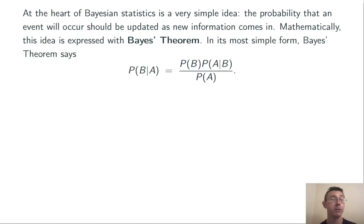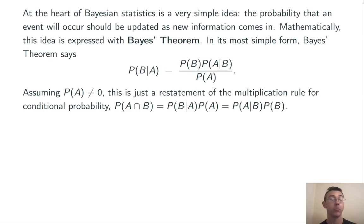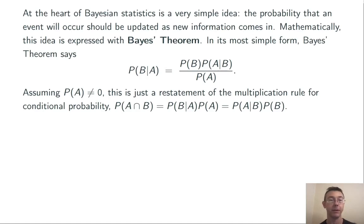The probability of B given A is equal to the probability of B times the probability of A given B, divided by the probability of A. Really, this is just a restatement of the multiplication rule for conditional probability, which says that the probability of A and B can be written in two different ways: the probability of B given A times the probability of A, and the probability of A given B times the probability of B.